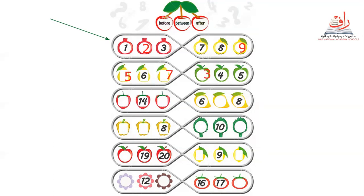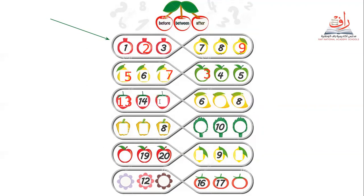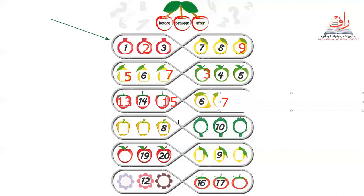Let's go to the strawberry. Do you see the strawberry? We have 14. Before 14, what do we have? Thirteen. Well done, good job! And after 14? Fifteen. Excellent, well done, good job! We have here number six — after number six, what do we have? Then number eight — seven. Excellent, super!